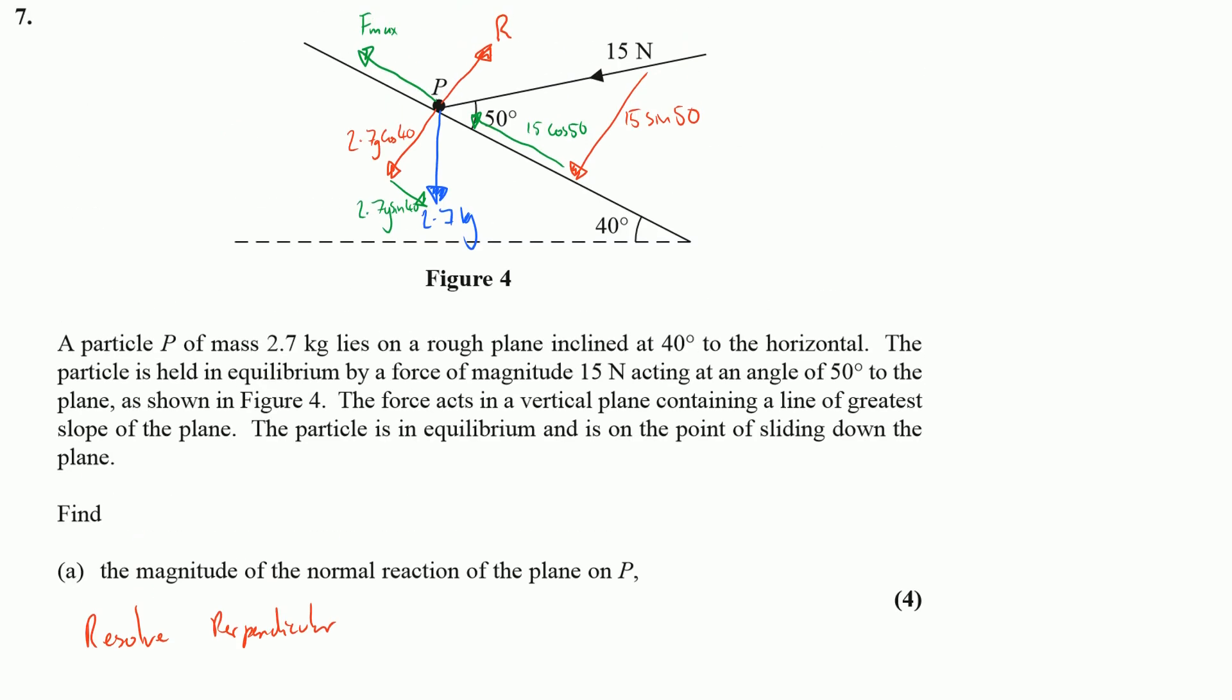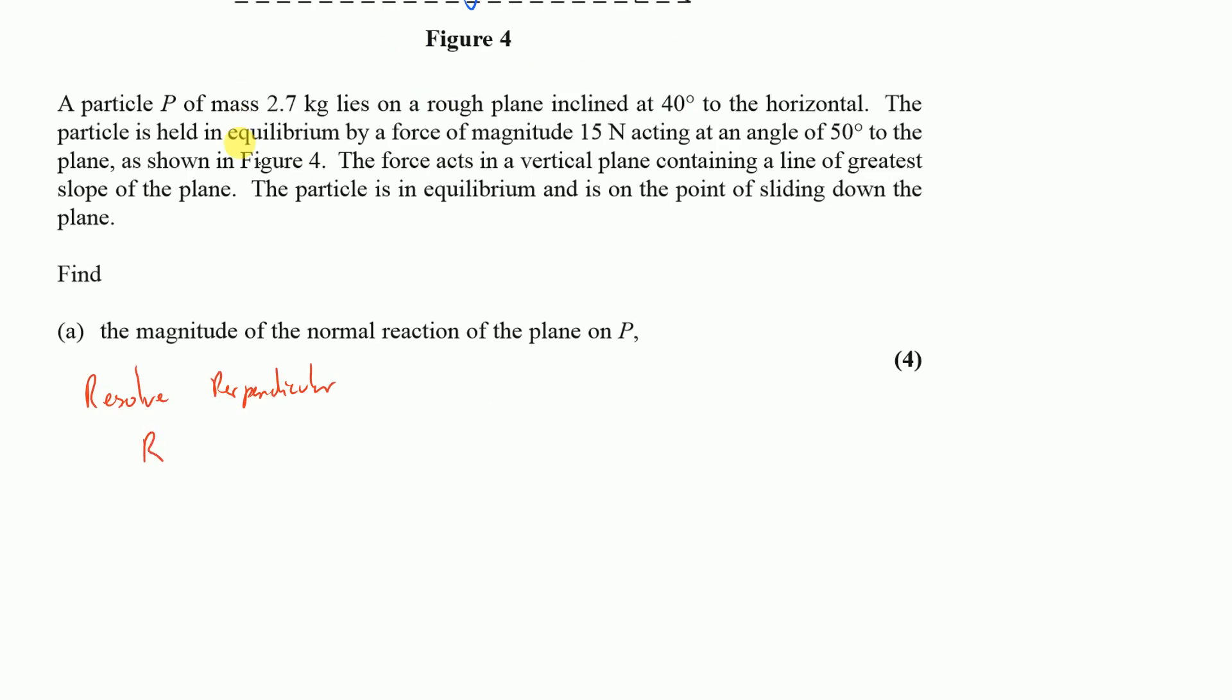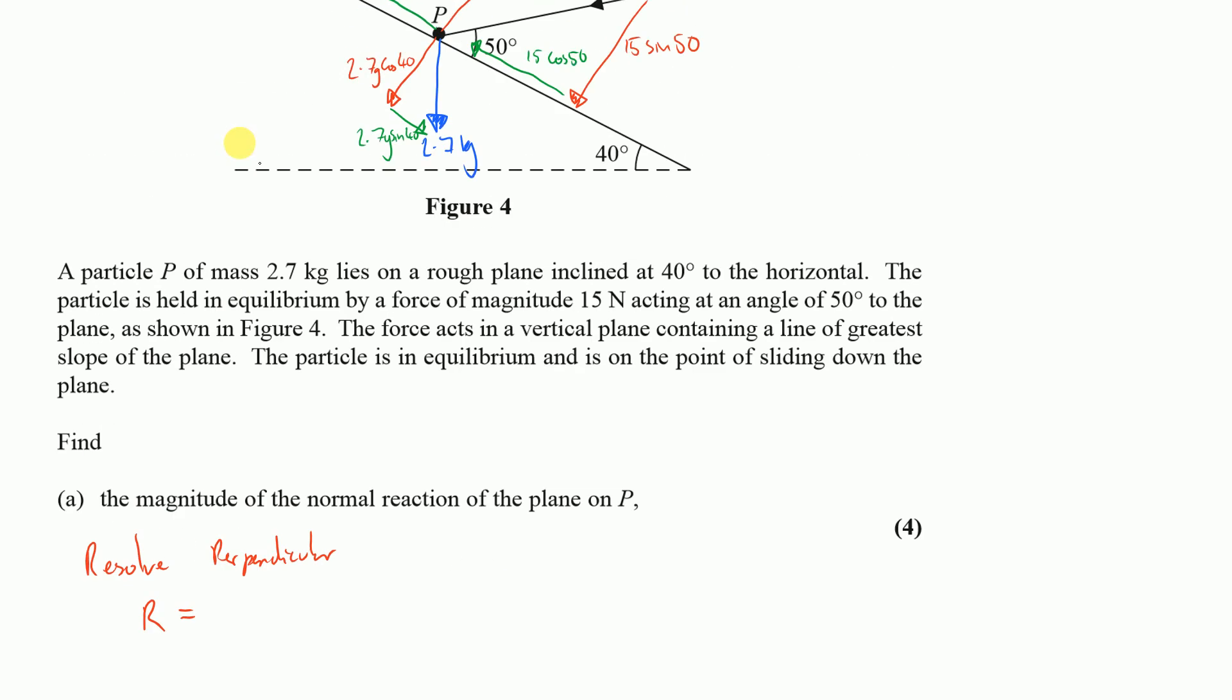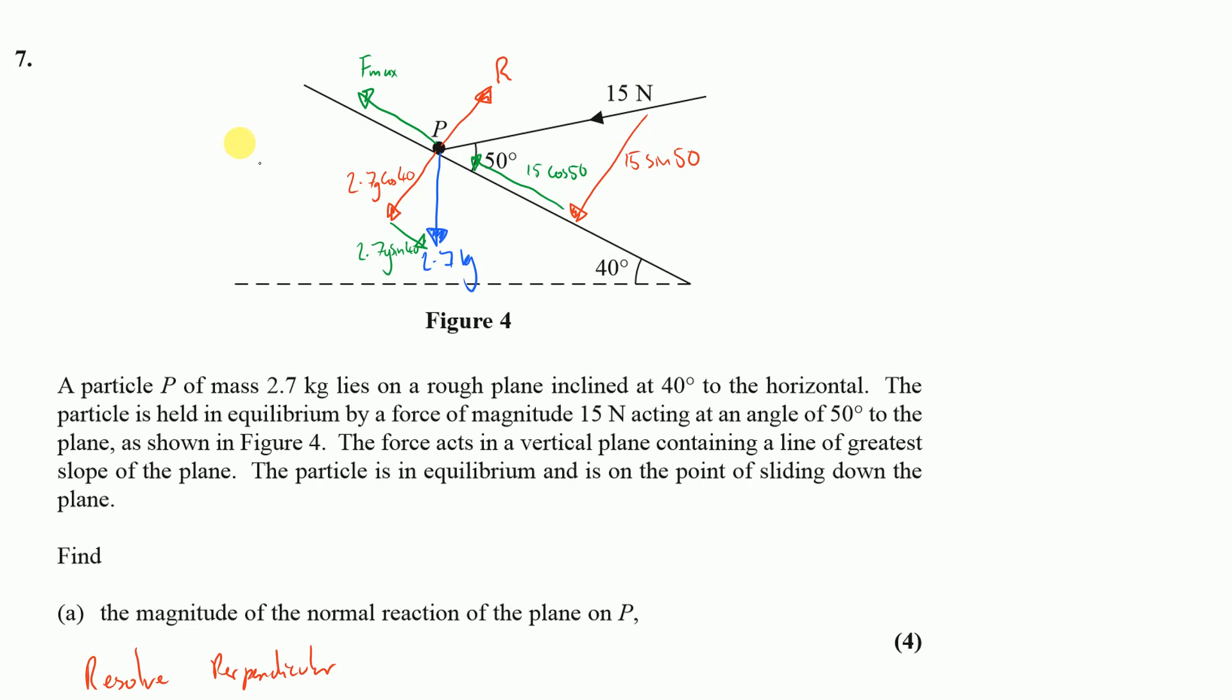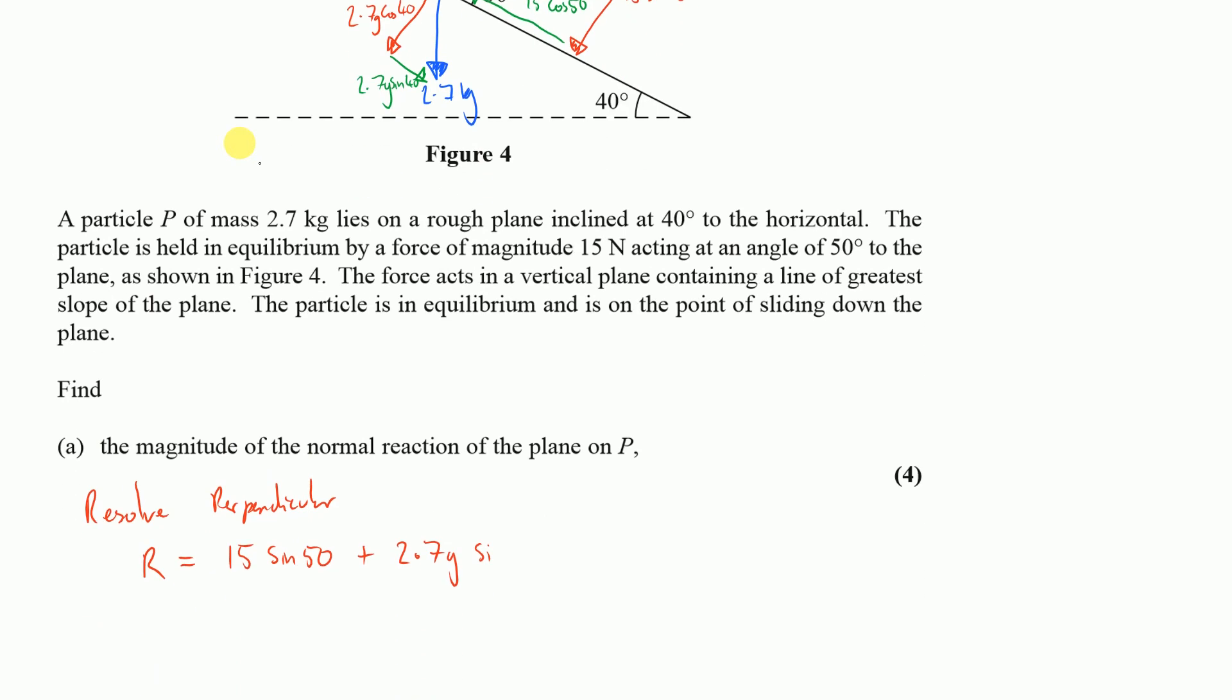If I do that, all the forces that are up, which is R, will be equal to all my forces acting down, which are going to be my 15 sine 50 and my 2.7 G cos 40. So that's 15 sine 50 plus 2.7 G cos 40.